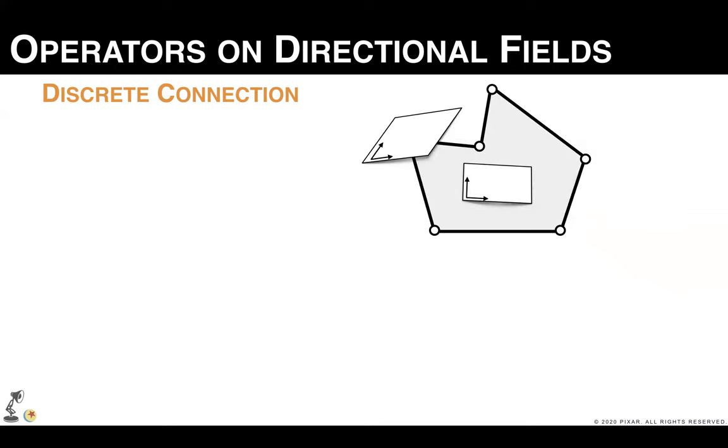In our construction, we assign a tangent plane per vertex and per face of our polygonal mesh, and then we encode the discrete connection as the smallest rotation mapping normals from each vertex to each incident face. With a discrete connection, we can then collect the vectors u at the vertices of a face f and bring them to a common coordinate system defined at that face. And we indicate these rotated vectors by u superscript nabla.